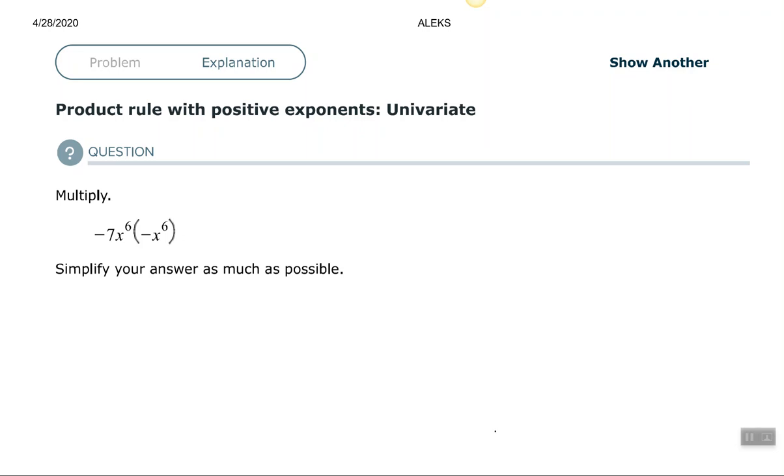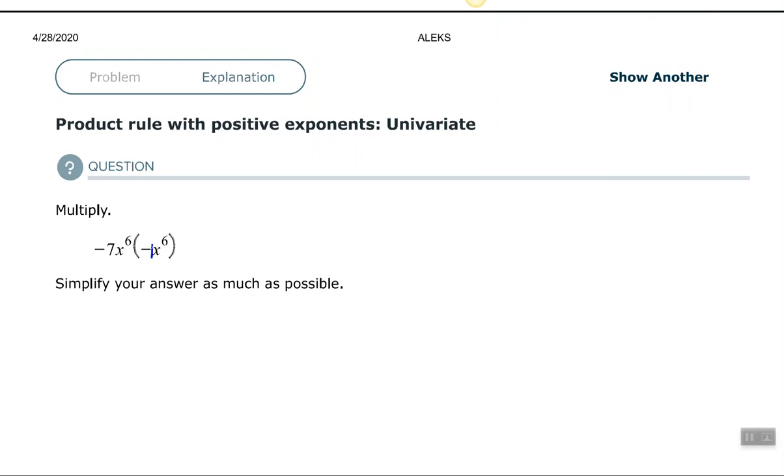We want to multiply negative 7 times x to the 6th times understood negative 1 x to the 6th. So let's rewrite these. Since we can use the commutative property and associative property for multiplication, which means we can change the order and regroup, let's do that. We know first of all that there's understood to be a negative 1. So let's rewrite that as negative 7 times negative 1, and then x to the 6th times x to the 6th.